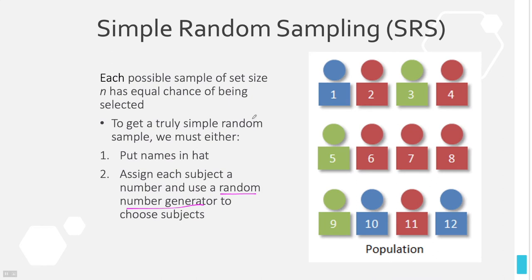Now let's talk about four different types of sampling — four different types of random sampling. Our goal, of course, is to do random sampling. All four types of random sampling involve a random number generator — every single type of sampling will involve a random number generator.